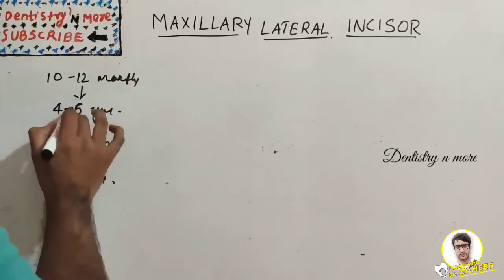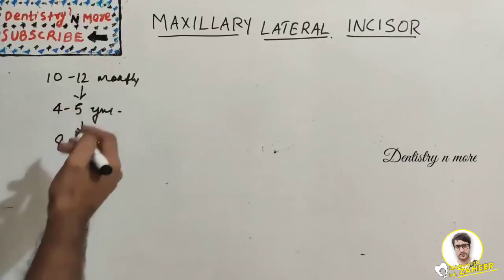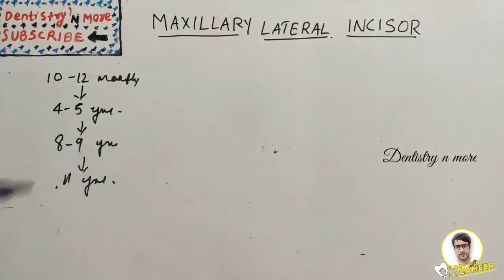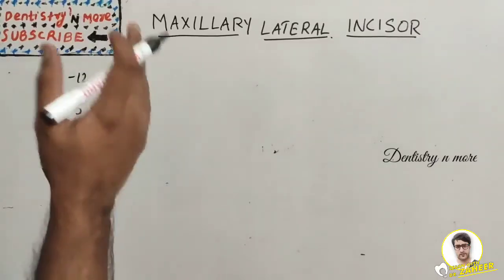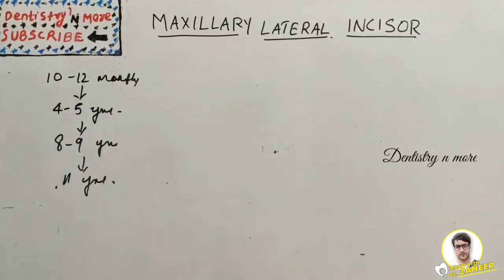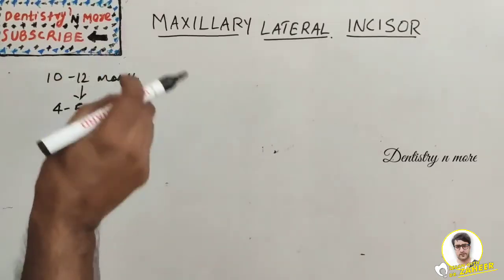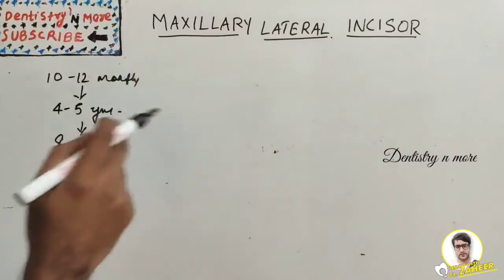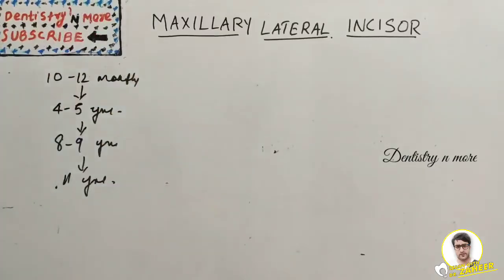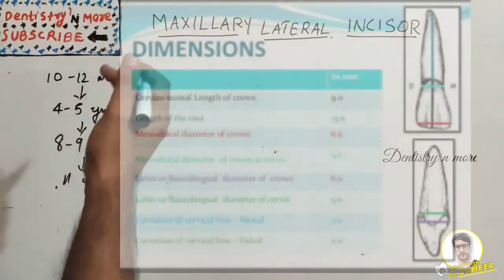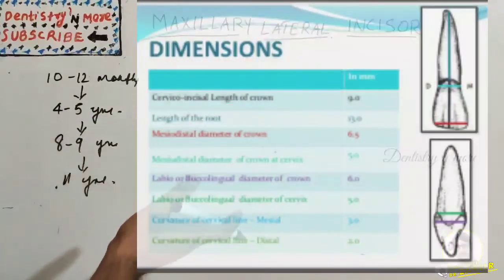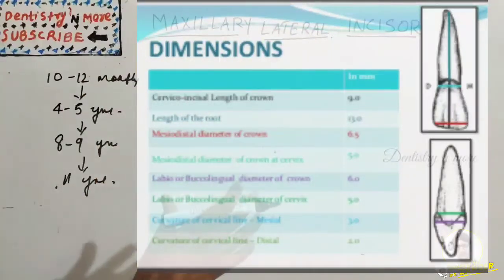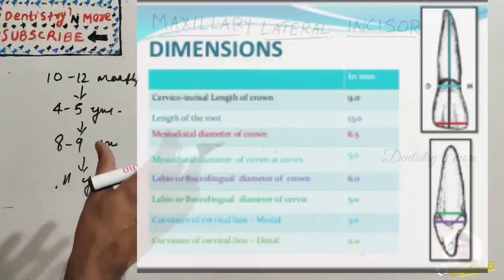You need to study the maxillary central incisor first, then the lateral incisor, then the canine in that order — it will be much easier that way. Don't pick up one tooth and study it in isolation; start from the central incisor through to the maxillary third molar. Regarding dimensions: the crown length is 9 mm, the root length is 13 mm, and the mesiodistal diameter is 6.5 mm.